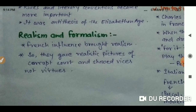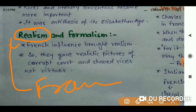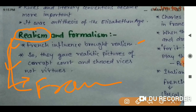Realism came from France. The French influence brought realism into English literature at that time, and realism is an important part of modern English writing as well. Realism started in the Age of Dryden — in the Restoration period. Writers gave realistic pictures of the corrupt court and showed vices rather than virtues, and this is also a quality of modern English literature.